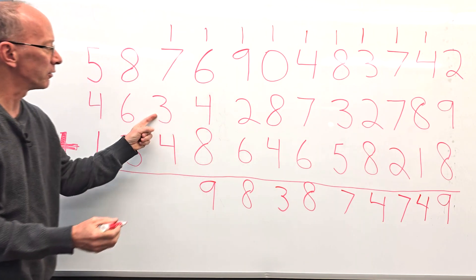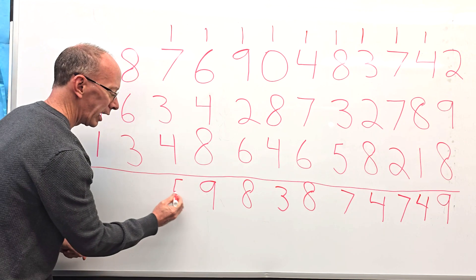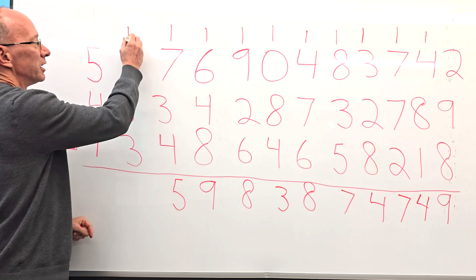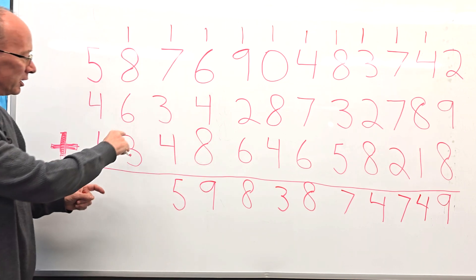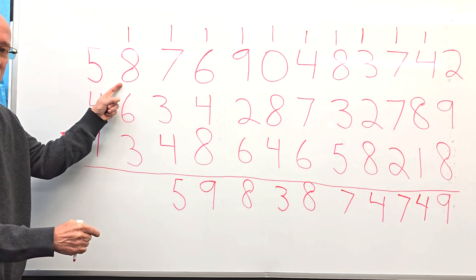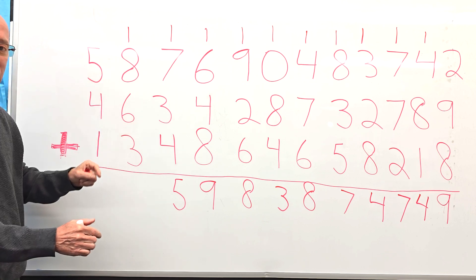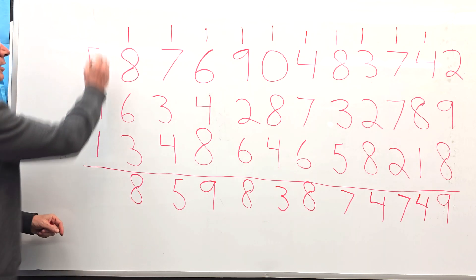And then 7 and 3 is 10, plus the 4 is 14, and then 15. Wow. It's a good thing we have a gigantic board here. Let's go ahead and do this one here. I have 6 and 3 is 9, 9 and 8 is 17, plus the 1 is 18. We're almost done.